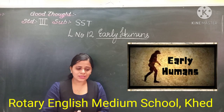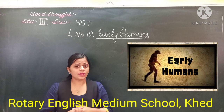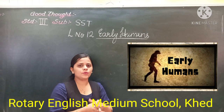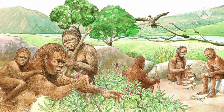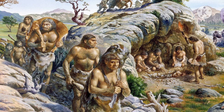What we discussed in that? We discussed that these early humans, they live in jungles, they live in forests and caves. And we also discussed that these early humans, they move from one place to another in search of food and shelter.